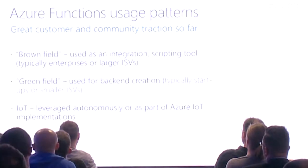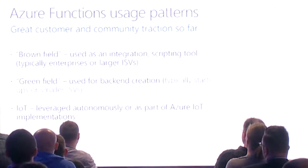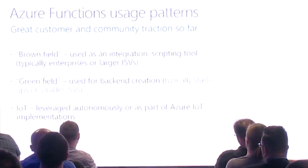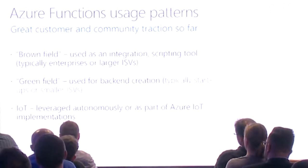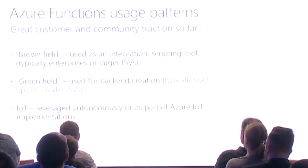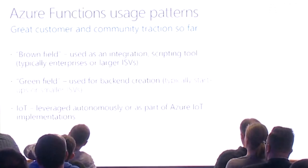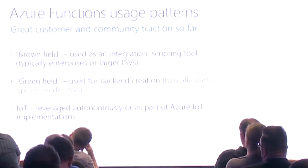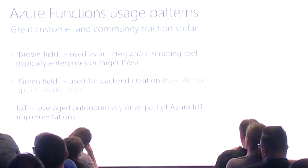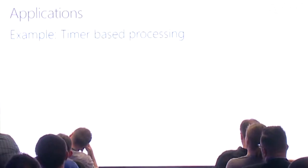Some usage patterns. Brownfield: used as an integration scripting tool, typically for enterprises — integrate and transform data from one source to another only when new data appears. Greenfield: back-end creation for startups or smaller ISVs. That mobile Instagram-style app for fishermen uses a serverless back-end because it saves them money and is easy to manage. IoT: watch event hubs, only fire when certain conditions are met, or fire off messages to IoT devices when conditions are met.